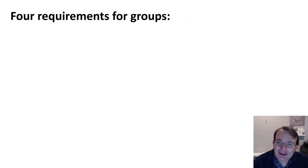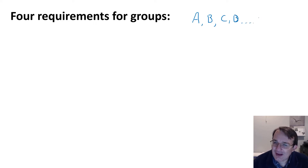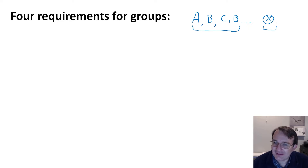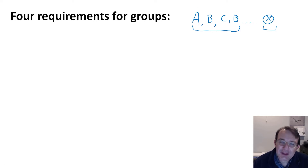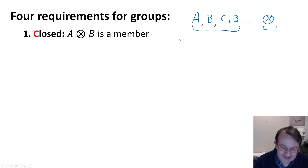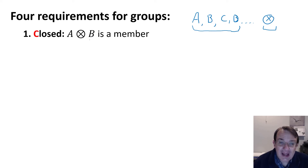In mathematics, a group is essentially a list of elements or members, and these are operated on by some operator. The group is the list of elements plus the operator — this is a binary operator — and for this list of elements and operator to be a group, there have to be four conditions satisfied. The first is that it has to be a closed group: if a and b are members of the group, then a operated on b also has to be a member of the group.